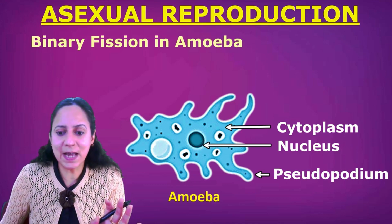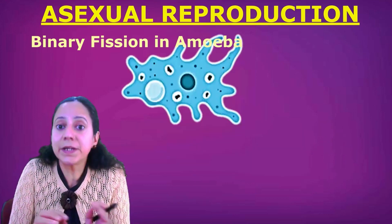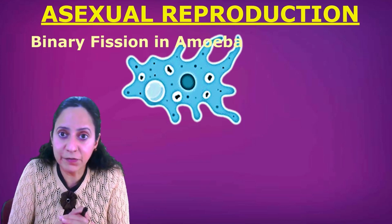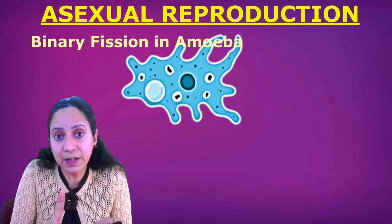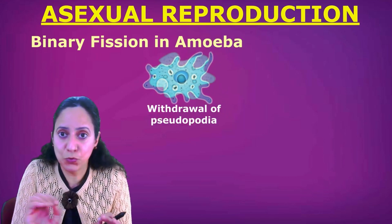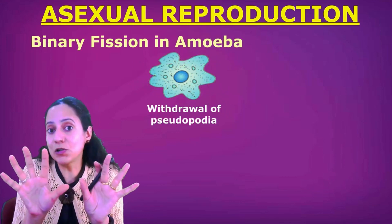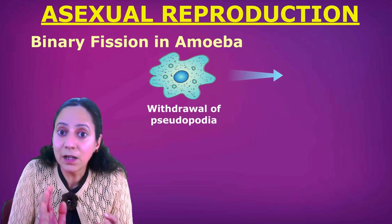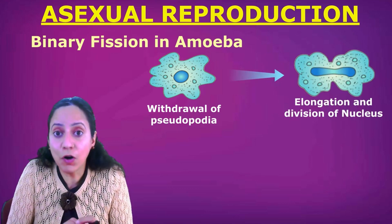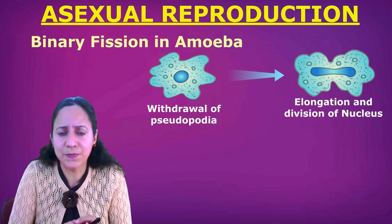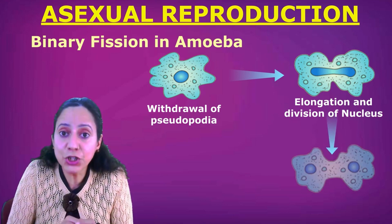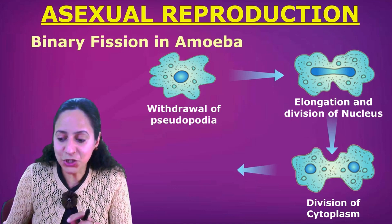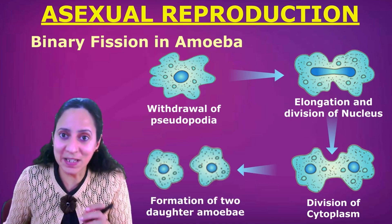When the mother amoeba is about to undergo binary fission, the first step is withdrawal of pseudopodia — it will withdraw its finger-like false feet. Second is elongation and division of the nucleus into two halves, followed by division of the cytoplasm into two parts, and then formation of two daughter amoeba.